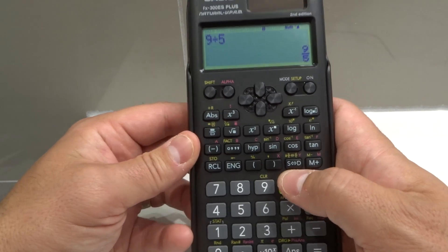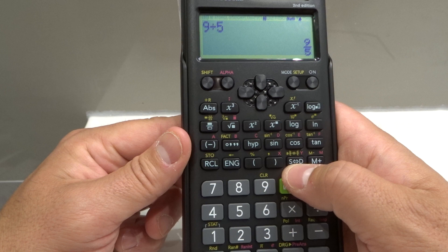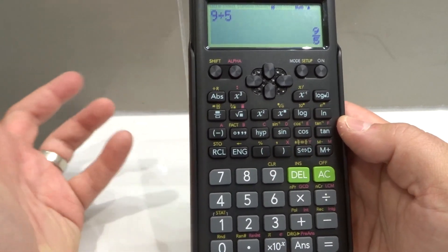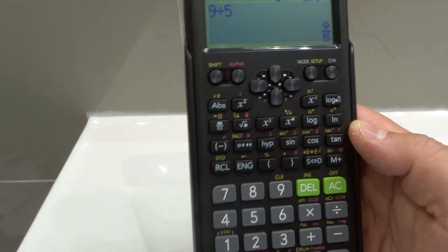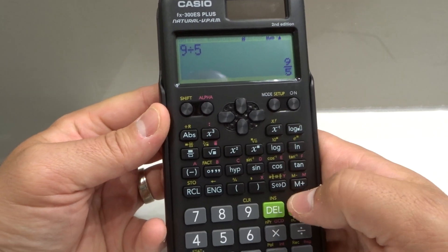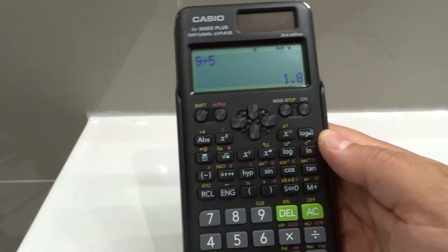In most cases, you're going to look for this symbol right here, the S and then the arrow going in both directions to the D. What that means is you're going basically from standard to decimal, back and forth. That's the button you're going to press. Watch what happens when I press this button. It's now going to change to decimal format: 1.8.